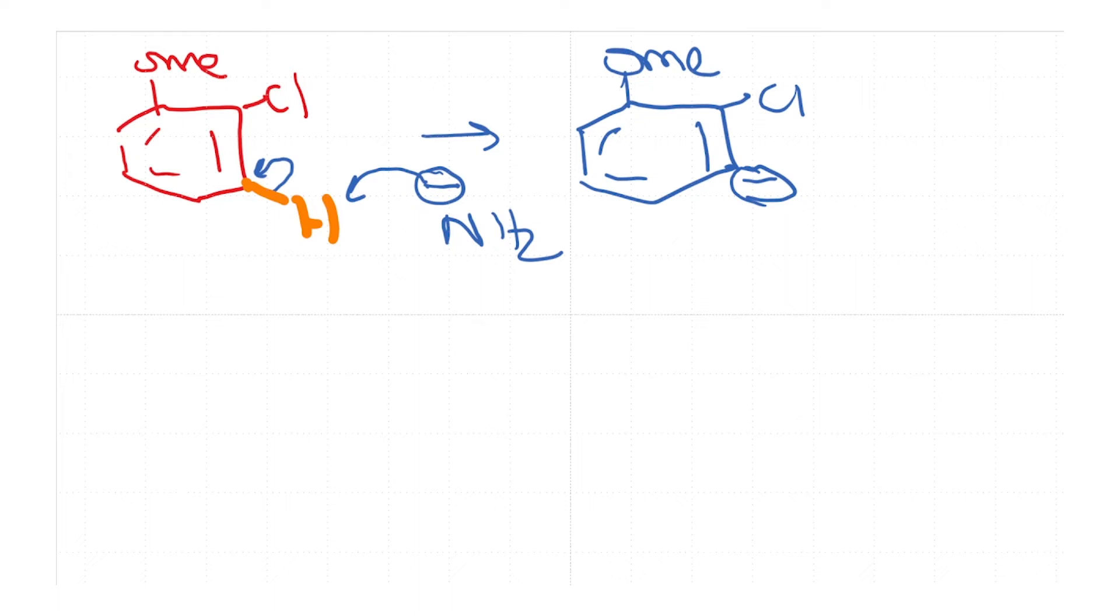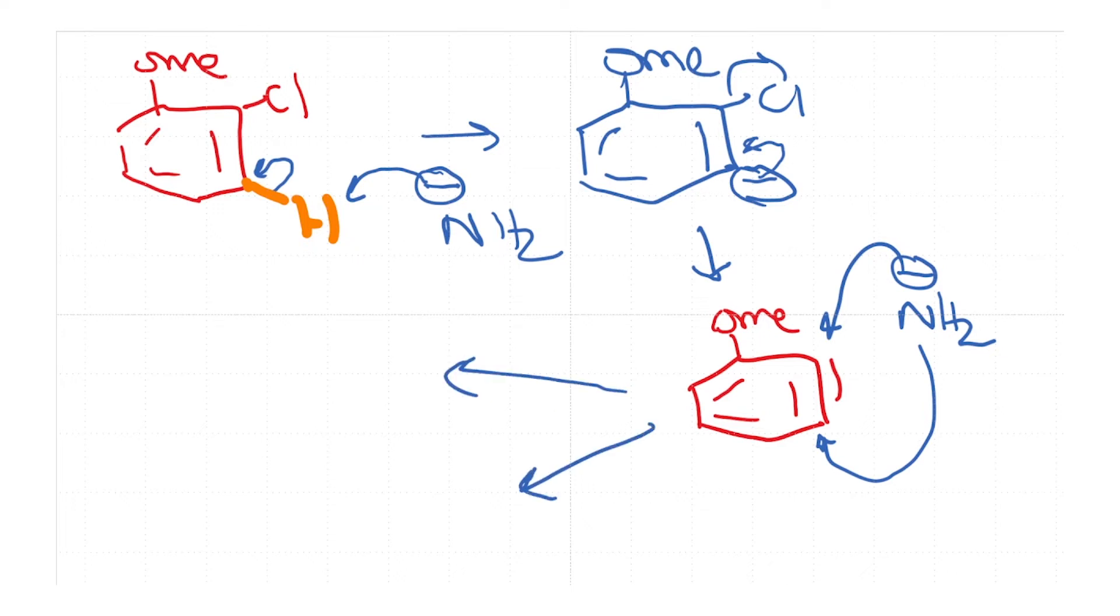Now, the next step would be the loss of the chloride to give you the potentially key intermediate which would be the benzyne. Now, you have 2 possibilities for attack. So this is the key intermediate. Now, there are 2 possibilities: NH2 minus can attack from this side or it can attack from here. So this is going to give us possibly 2 products wherein you have a 1-2 attack or a 1-3 attack. That is, with respect to the methoxy group, the attack happens either at the 2 position or at the 3 position.